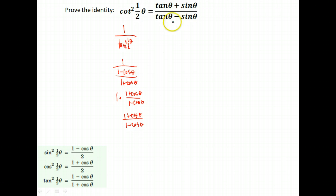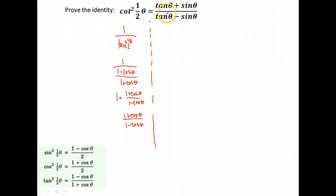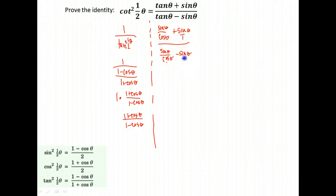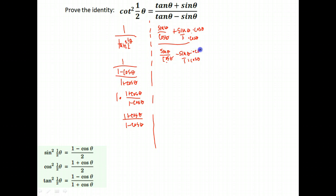So what I'm going to do now is start working on the right-hand side instead. I'm going to change all of my tangents to sines and cosines, and separate my two sides so I know where I'm at. Tangent is sine theta over cosine theta, plus sine theta. On the bottom it's sine theta over cosine theta minus sine theta. I need a common denominator to add these together. So I need cosine theta in the denominator — I'll multiply by cosine theta top and bottom.